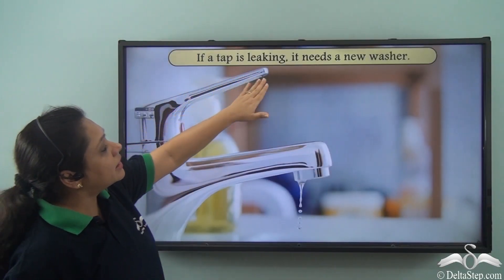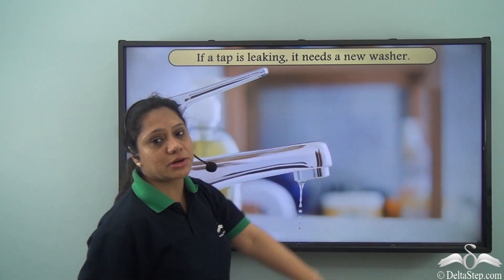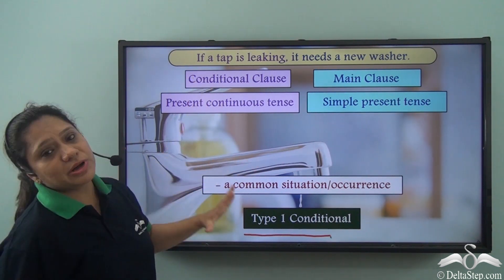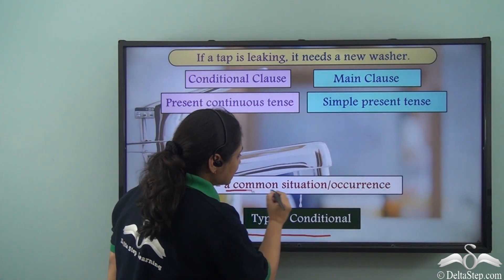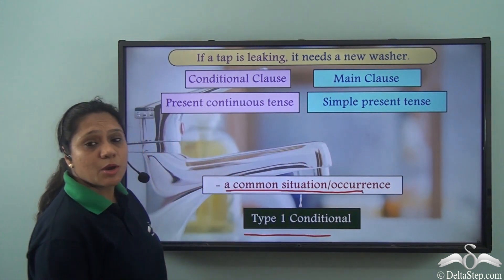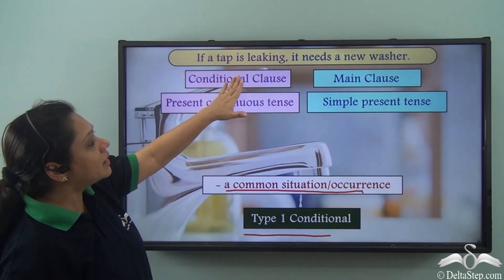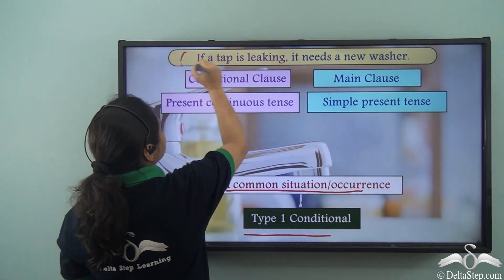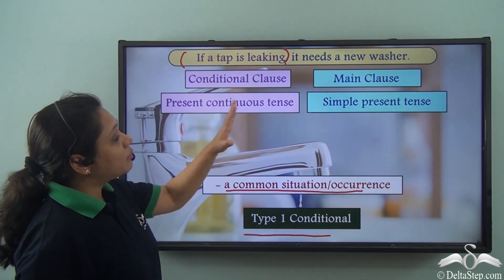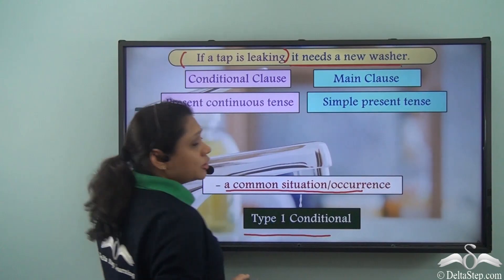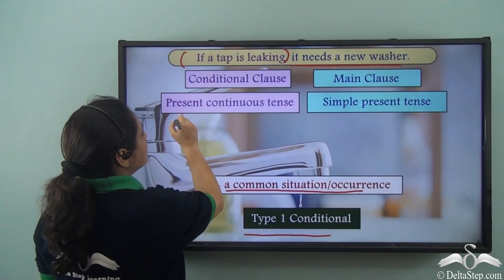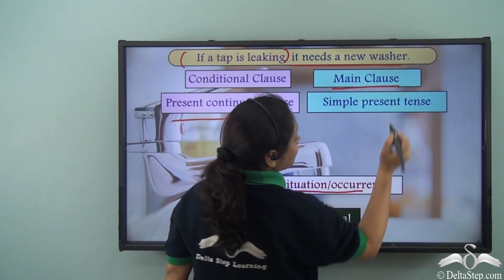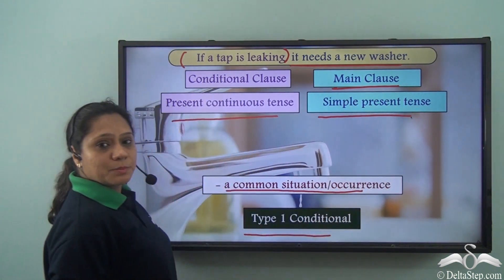'If a tap is leaking, it needs a new washer.' This is another Type 1 conditional referring to a common situation or occurrence. 'If a tap is leaking' is the conditional clause and 'it needs a new washer' is the main clause. The conditional clause is in the present continuous tense and the main clause is in the simple present tense.